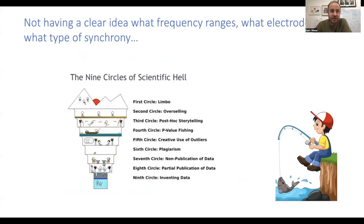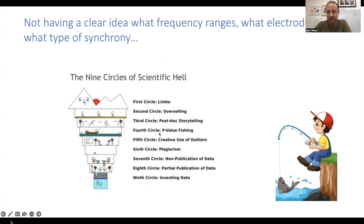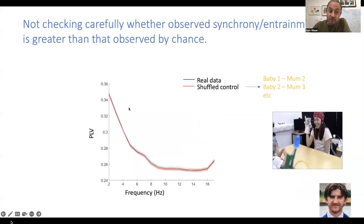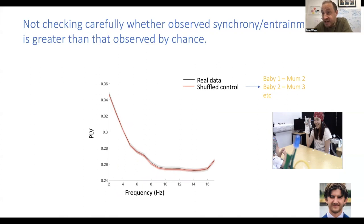I presented that as based on my own past failings — how not to do it. So what are the problems with this approach? Firstly, not having a clear idea what frequency range, what electrode combinations, what type of synchrony you're looking at — it's just very simply what we call fishing: hypothesis testing after the results are known, which puts us somewhere between the third and fourth circles of scientific hell. Another really important issue is that many papers — including my own — haven't always checked carefully whether the observed synchrony or entrainment was better than chance. They just directly compare between two conditions without comparing with chance.